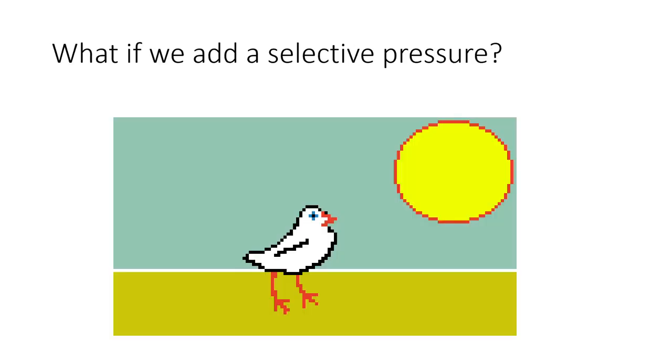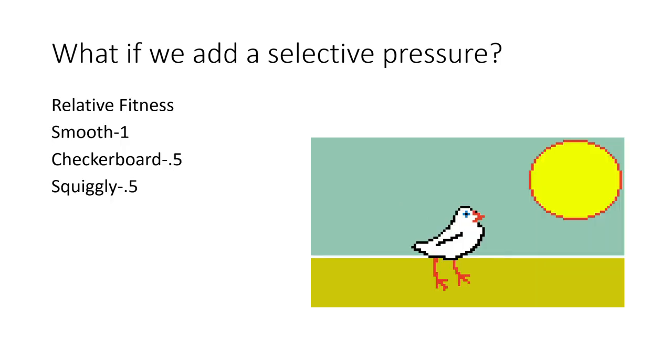Now, what if we add a selective pressure to knock off Hardy-Weinberg equilibrium's balance? So here we can see the relative fitness of each phenotype versus predatory birds. As we can see, smooth has a survival advantage while checkerboard and squiggly will be preyed upon.